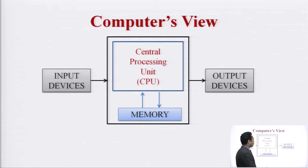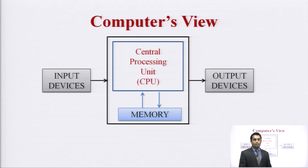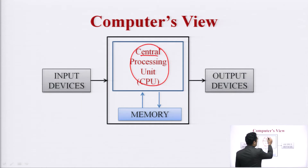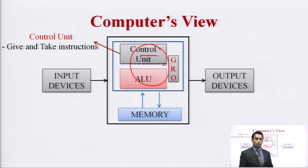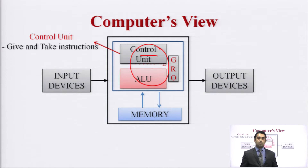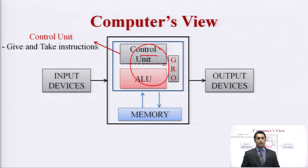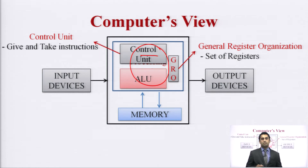Let us have a look at the basic computer view. You are able to see four basic components of a computer where the processor is the main one. If we talk about this CPU and magnify it, we will see three components in it. One is the control unit, which is responsible for performing the operations. When I give the instruction to the control unit, this instruction is bifurcated into micro operations and given to other peripherals to perform various operations. Another one is the general register organization, which is a set of registers that temporarily store the data, and the distribution of data is through this register set.